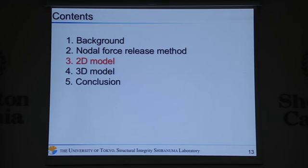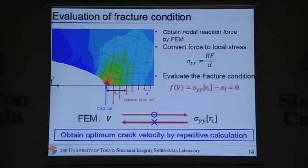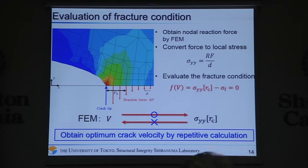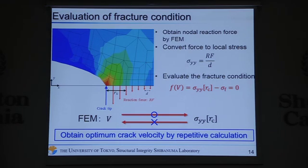Next, we talk about the two-dimensional model. In this model, based on the local fracture stress criterion, if the fracture condition is satisfied, the crack propagates. To evaluate the fracture condition, first we obtain the nodal reaction force by FEM, and then convert it to the local stress. We evaluate the fracture condition as shown in this equation. We want to know the crack velocity that satisfies this fracture condition, but crack velocity is always the input value and stress is the output in FEM, so we obtain the optimal crack velocity by repeated calculation.